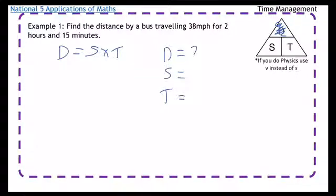So distance is what we're looking for. The speed is 38, and the time is 2 hours and 15 minutes. Okay, now I can't just write 2 hours and 15 minutes into my formula. What I've got to do instead is I've got to write it as a decimal hour.